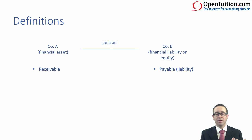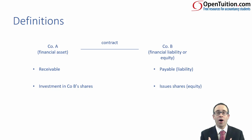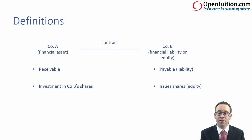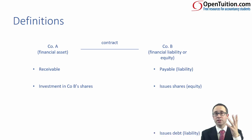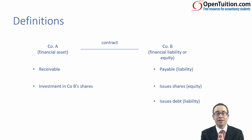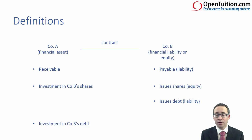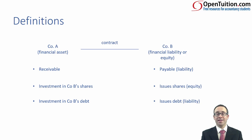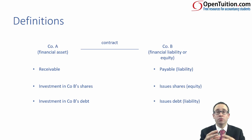If company B has issued shares, company A will have acquired them. Company A now has an investment in company B's shares — an investment in the equity of another entity — which by definition is a financial asset. Alternatively, company B could raise debt finance. The issue of debt gives rise to a financial liability because there is a contractual obligation to pay cash. If company A has bought that debt, it has a contractual right to receive cash, which is therefore a financial asset.